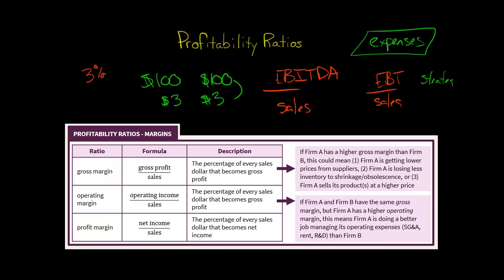When I talk about pricing strategy, some companies tend to have higher profit margins than others just based on what industry they're in. For example, the jewelry industry tends to have higher margins than the grocery store industry. In the jewelry industry, they price the product a lot higher than what it costs them to purchase it. Whereas grocery stores — if you buy a box of cereal for $4, they didn't buy it for 10 cents. So there are low profit margins in the grocery industry and high profit margins in the jewelry industry.